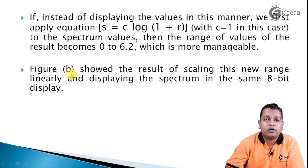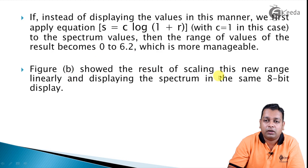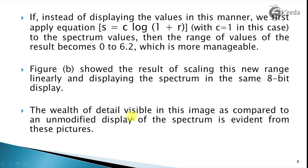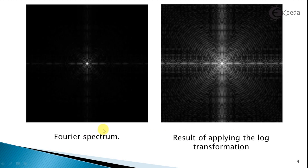Figure b, the result of the logarithmic transformation, shows the scaling effect along with the new range displayed linearly in the same 8-bit environment. The wealth of detail visible in this image compared to the unmodified spectrum display is evident from these pictures. This is the significance of working with the logarithmic transformation — the information quality has been enhanced by applying it to such an image.